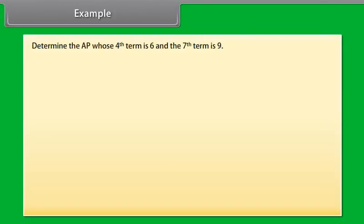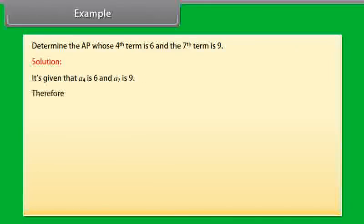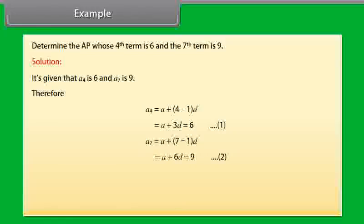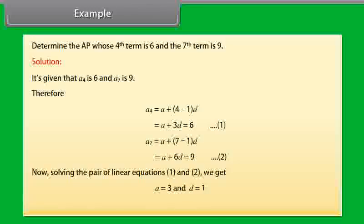Example: Determine the AP whose 4th term is 6 and the 7th term is 9. Solution: It's given that A₄ is 6 and A₇ is 9. Therefore, A₄ = A + (4-1)D = A + 3D = 6. Mark it as equation 1. And A₇ = A + (7-1)D = A + 6D = 9. Mark it as equation 2. Now solving the pair of linear equations 1 and 2, we get A is equal to 3 and D is equal to 1.